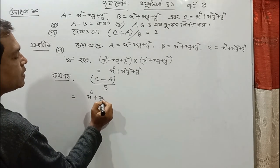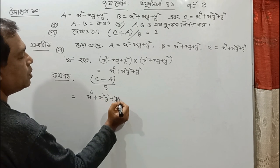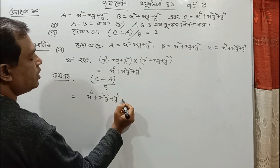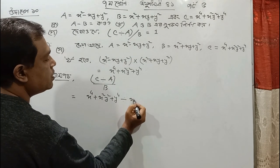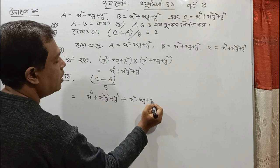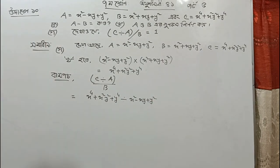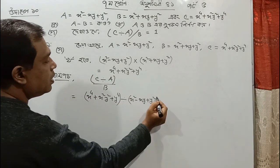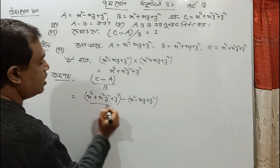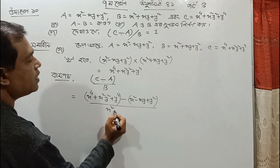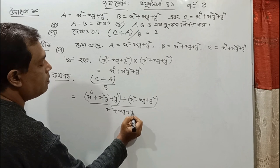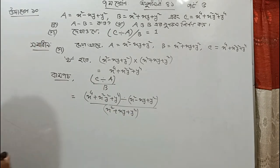x squared y squared plus y to the power 4. The bracket gives x squared minus xy plus y squared. I am ready to do the bracket. x squared plus xy plus y squared — it is on the right with bracket.